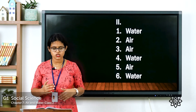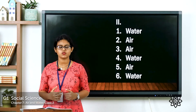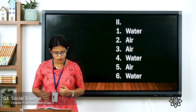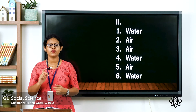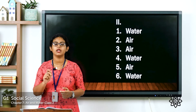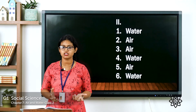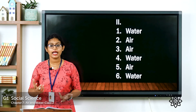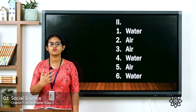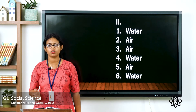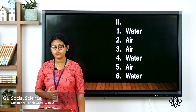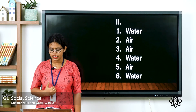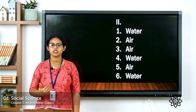Let's see the answers. Where does a fish live? Fish live in water — the answer is water. What makes a pinwheel go round and round? It moves with the help of air — the answer is air. What makes a flag move? Air. What does a boat float upon? It floats upon water — the answer is water. What helps us take a balloon ride in the sky? It is air. What do we swim in? We swim in water.